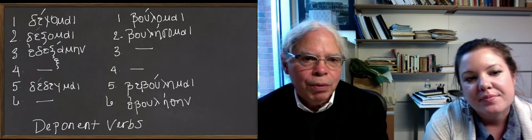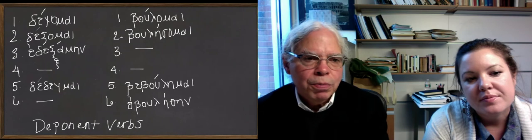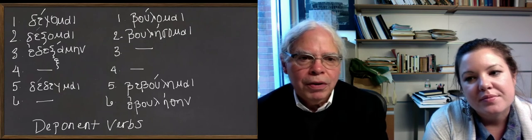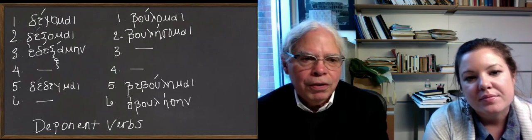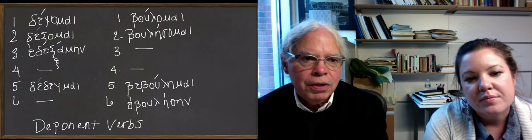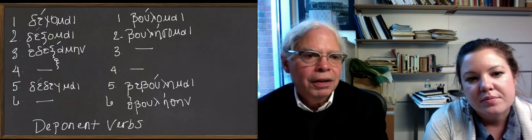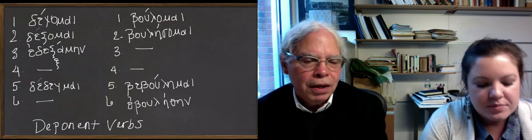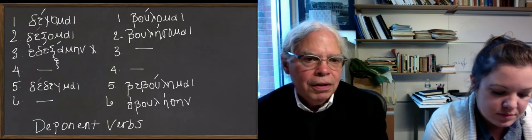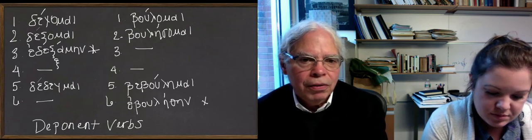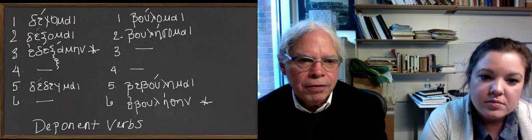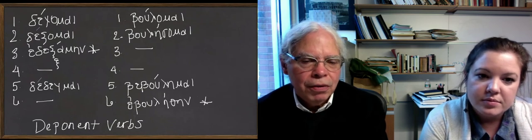That's why there's no fourth principal part. But the difference between the one in the first column and the one in the second column is that the one in the first column has an aorist middle. That's number three, an aorist middle. And the one in the second column has what looks formally like an aorist passive.